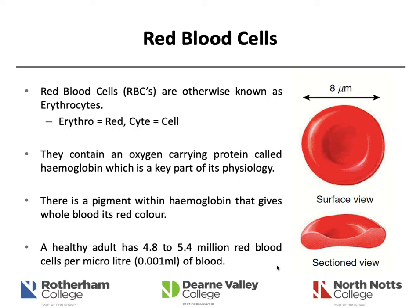A healthy adult has between 4.8 to 5.4 million red blood cells per microlitre — that is per 0.001 millilitres of blood. If you want to figure out what is in a full millilitre, multiply 5.4 by a thousand. That is a lot of cells.